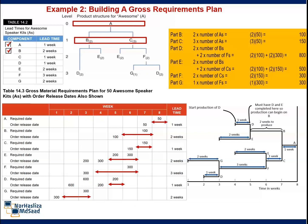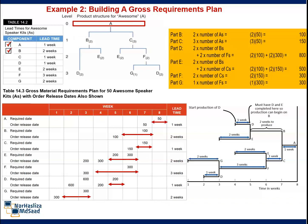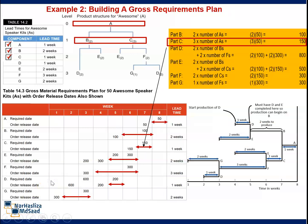Production of B therefore should start in Week 6. The lead time is subtracted from the required date for each item. Working backward, we can perform the same computations for all of the other items. Because D and E are used in two different places in awesome speaker kits, there are two entries in each data record.